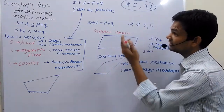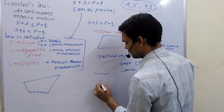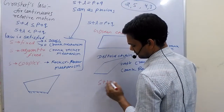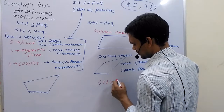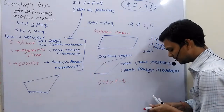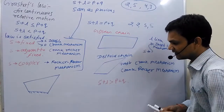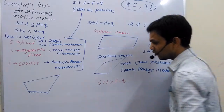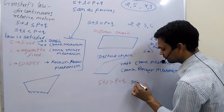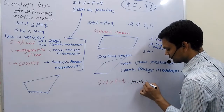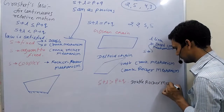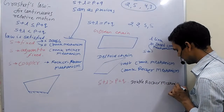If the law is not satisfied, then no matter which link you fix, you will obtain a double rocker mechanism.